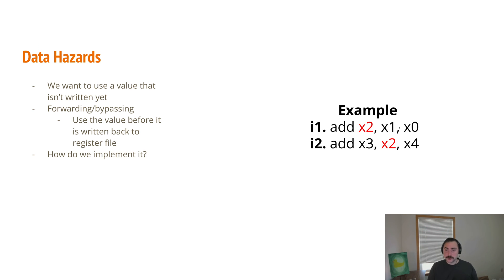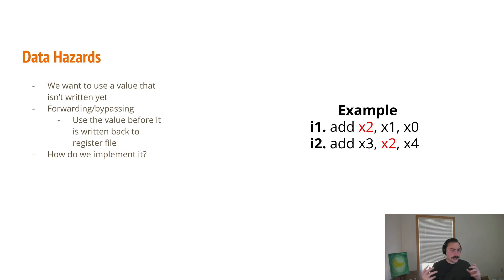Instruction i1 is adding the contents of x1 and x0 and storing the result into the x2 register. But our next instruction, i2, might want to read the x2 register — here, i2 is adding x2 and x4 and storing it in x3. The dependency is that i2 wants to read x2, but because of overlapping execution and because writeback is the last stage in our pipeline, we have a data hazard that might lead to stalls. i2 can't go through the decode stage and read the register file because it's relying on the updated value of x2 that hasn't been written yet.